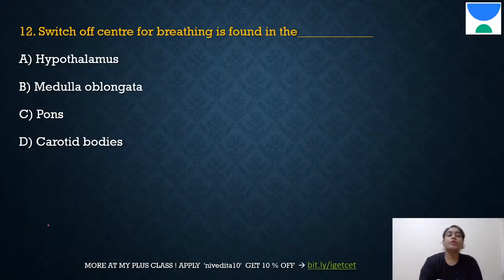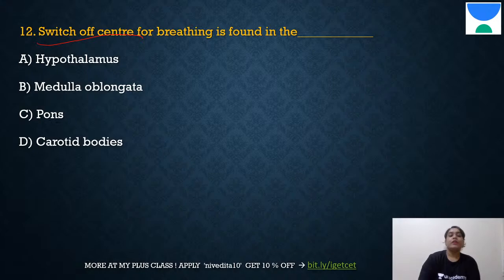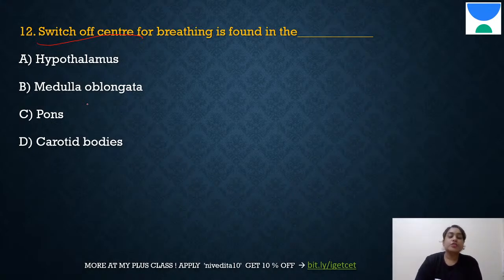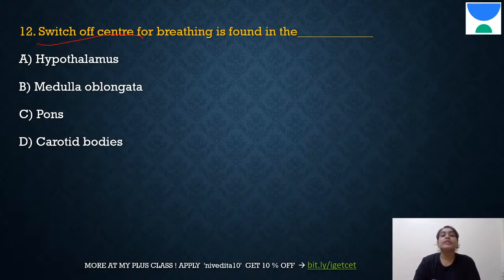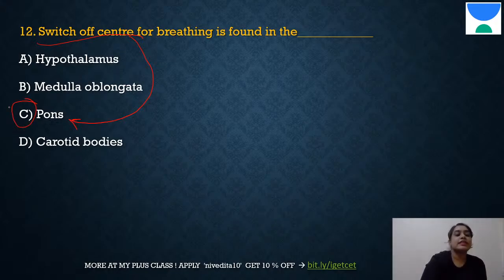Question 12: Which is the switch-off center and where is it located? The pneumotaxic center is called the switch-off center — it looks after the respiratory rhythm center. The pneumotaxic center is present in the pons. The answer is C: pons.